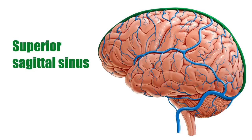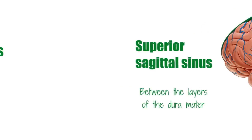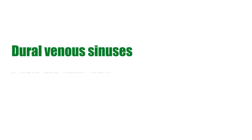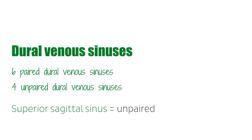The superior sagittal sinus is one of the venous channels found between the layers of the dura mater in the brain. These venous channels are known as the dural venous sinuses. There are 6 paired and 4 unpaired dural venous sinuses in the brain. Their function is to collect deoxygenated venous blood from the brain and channel it to the internal jugular vein. The superior sagittal sinus is one of the unpaired dural venous sinuses.